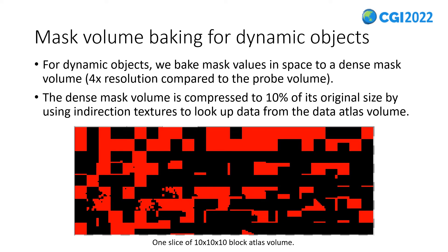For dynamic objects, baking mask maps is not applicable, so we instead bake a dense mask volume for the scene so that every position can get its mask value by interpolating the mask volume using its own position. The mask volume has four times the resolution of the probe volume, making it very large. To reduce its data size, we divide the volume into fixed-sized blocks, merge blocks with similar data into one block, and use an indirection texture to index the blocks. This reduces the volume size to only 10% of its original size, making it affordable for mobile devices.